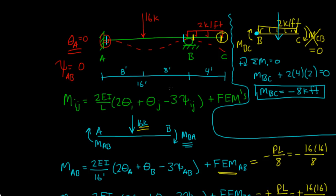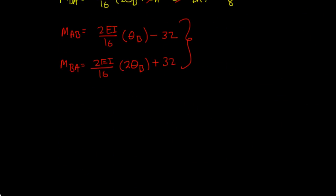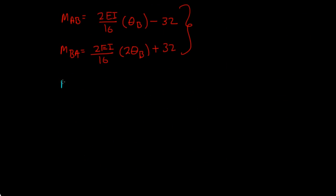Okay, so we have MBC, and we have the two equations. Let me actually write MBC is equal to negative 8 kip foot. Okay, so we have the equations MAB, MBA, MBC.